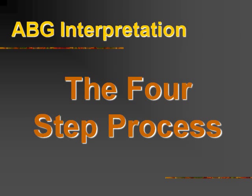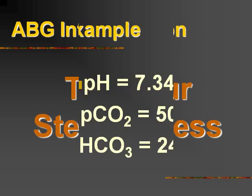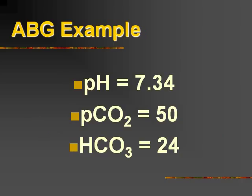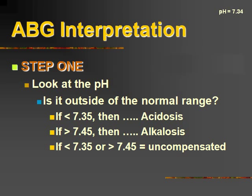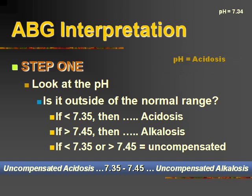Let's look at a four-step process to tackle interpreting an ABG. Here's one example: a pH of 7.34, PCO2 of 50, and a bicarb of 24. Step one, let's look at the pH — is it outside of the normal range? The pH in this case is 7.34, which fits the acidosis criteria. And remember, if it's outside 7.35 to 7.45, then it's going to be uncompensated.